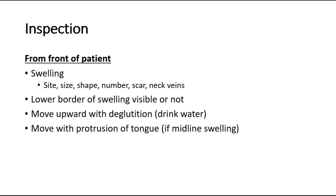We check whether the lower border of the swelling is visible or not. Then we ask the patient to do two things: first, give them a glass of water and ask them to drink one sip to see whether the swelling moves upwards with deglutition, confirming it is a thyroid swelling. Next, we ask the patient to protrude their tongue to see if the swelling moves — this is done for midline swelling, such as a thyroglossal duct cyst.